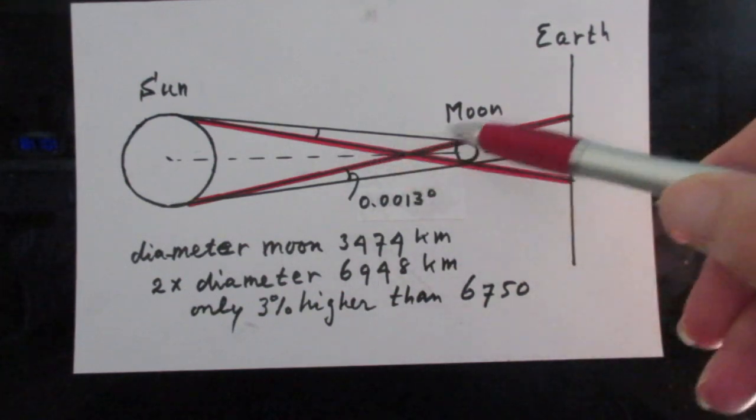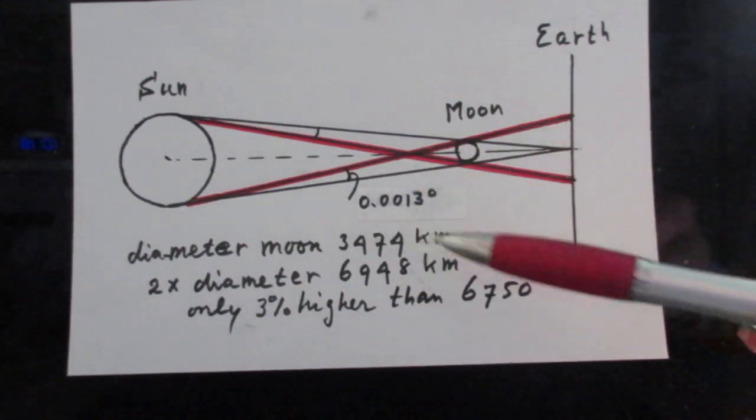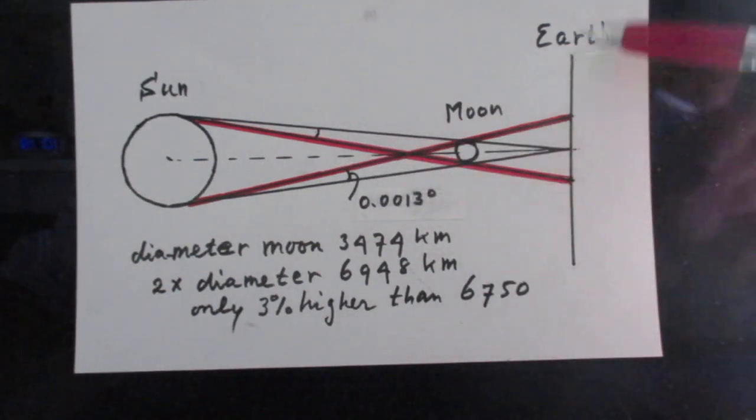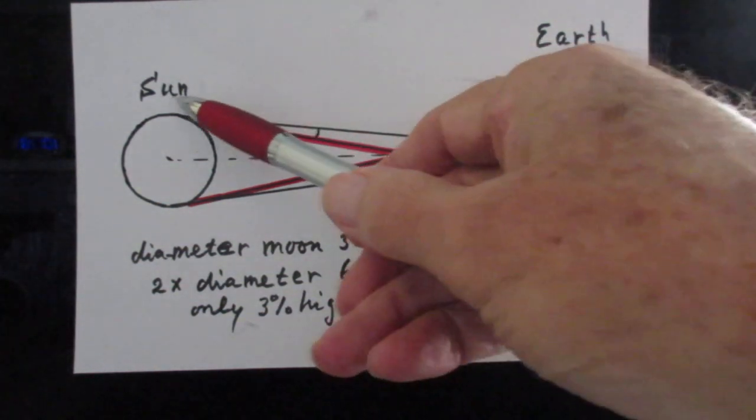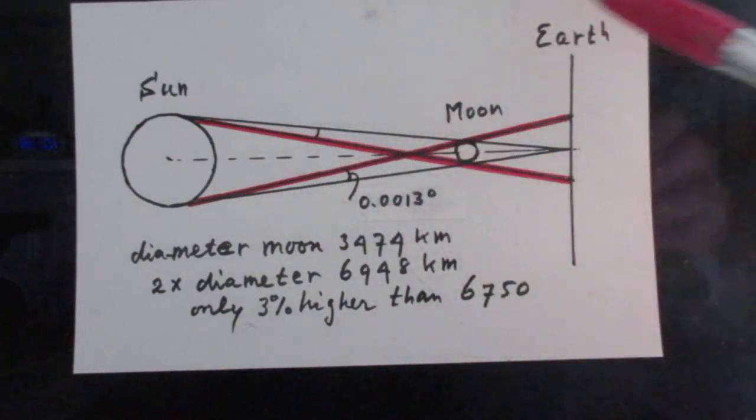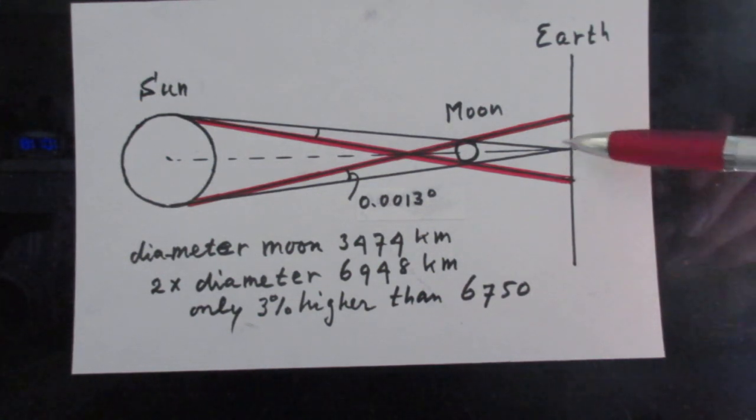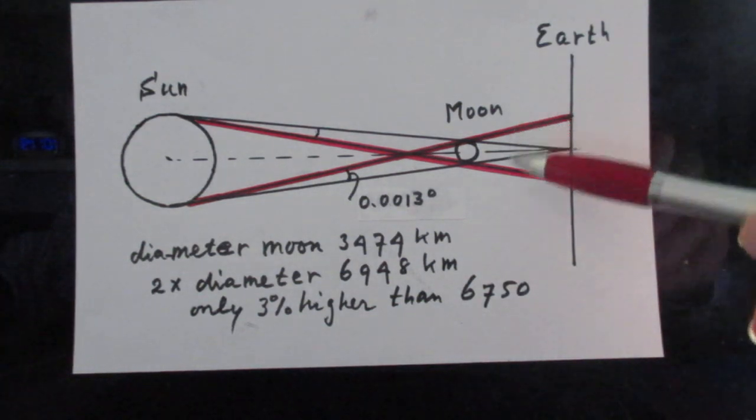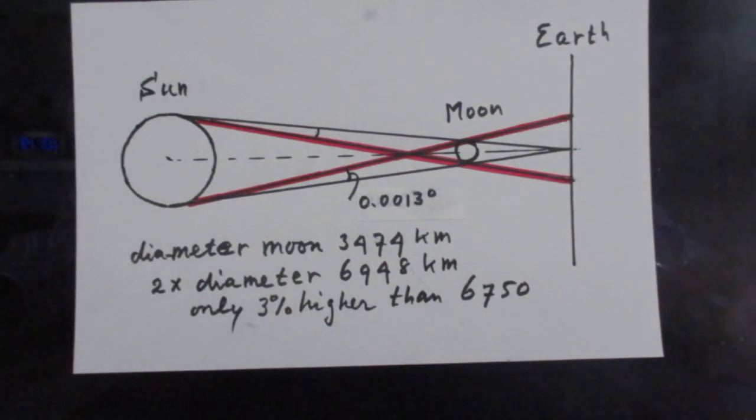That means these two lines are practically parallel. You can't even draw that angle. If these two lines are practically parallel, this here must be the diameter of the Moon. And the same of course holds for this angle. It's also 0.0013 degrees. So this must also be very close to the diameter of the Moon because these two lines are also effectively parallel.